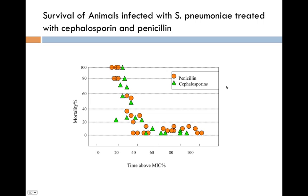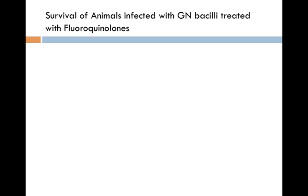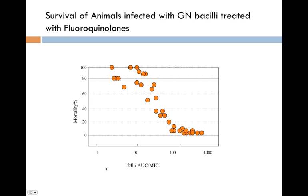Here are animals infected with gram-negative bacilli and treated with fluoroquinolones — concentration-dependent killers. We wouldn't expect time over the MIC to be the determinant here. Sure enough, what's most important is the 24-hour area under the curve over the MIC. If we can get that to be 100 or more, we've pretty much assured their survival. If you're in the low range, they're not likely to survive. Area under the curve over MIC is the key — concentration-dependent killing, exactly the opposite of the beta-lactams.